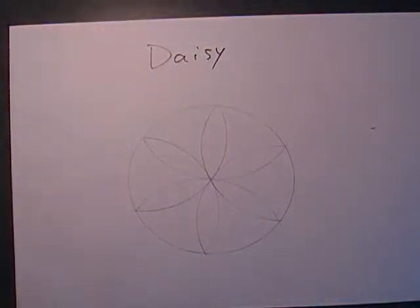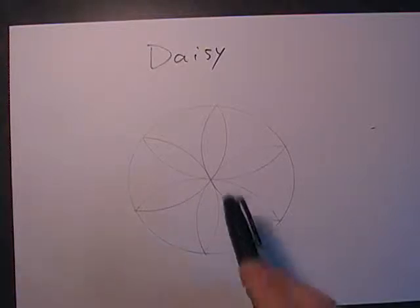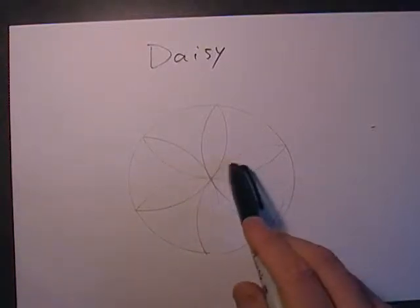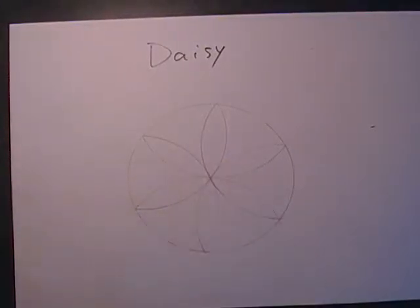You have six petals to your flower — one, two, three, four, five, six. And that's how you do the daisy.